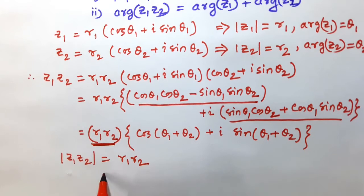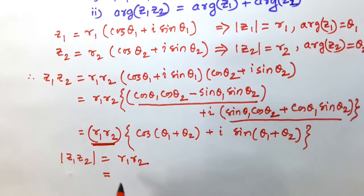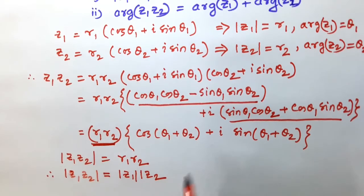Now what is R1? R1 is equal to mod Z1. What is R2? R2 is equal to mod Z2. So that we are getting mod Z1 into mod Z2.